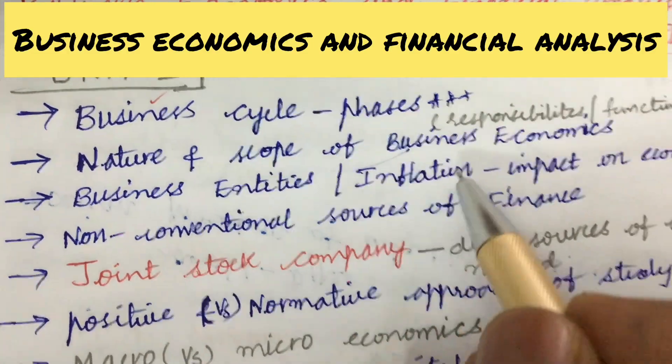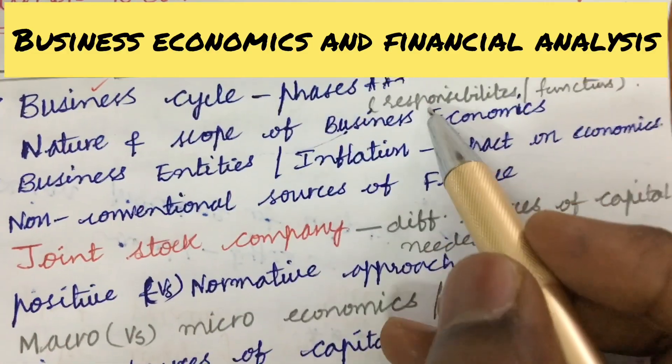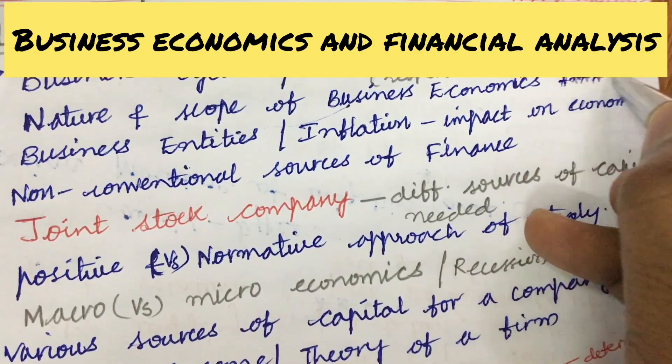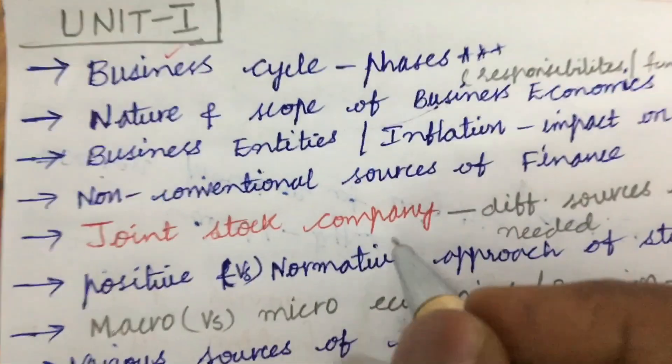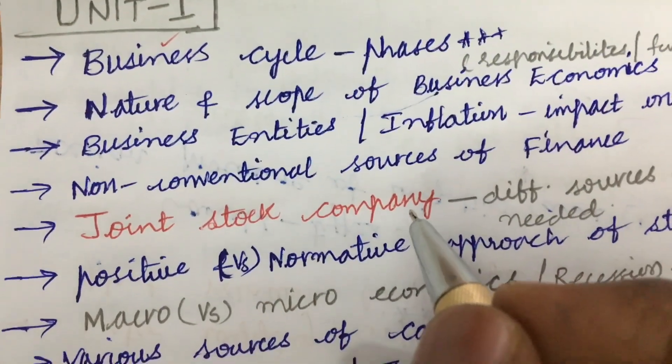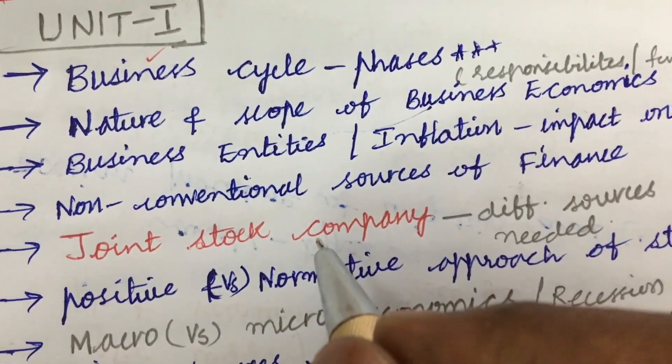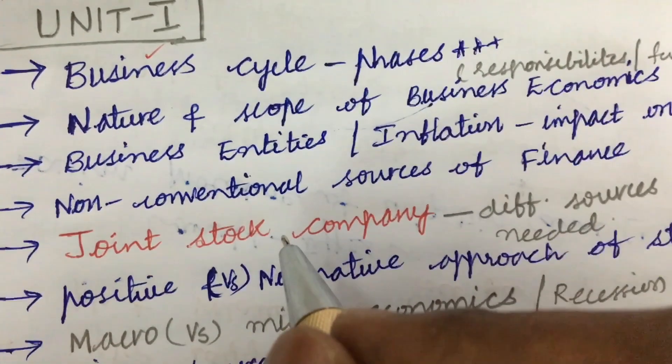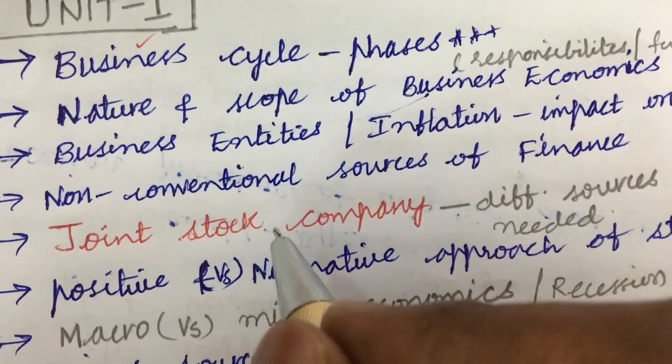The nature and scope of business economics as well as the responsibilities and functions is also one of the much-awaited and very important sure-shot questions, dear students. Do not expect direct questions. It may be a combination of 7 and 8 as well as 10-5 split. Why? Because the course is all about the definitions and the theory part.